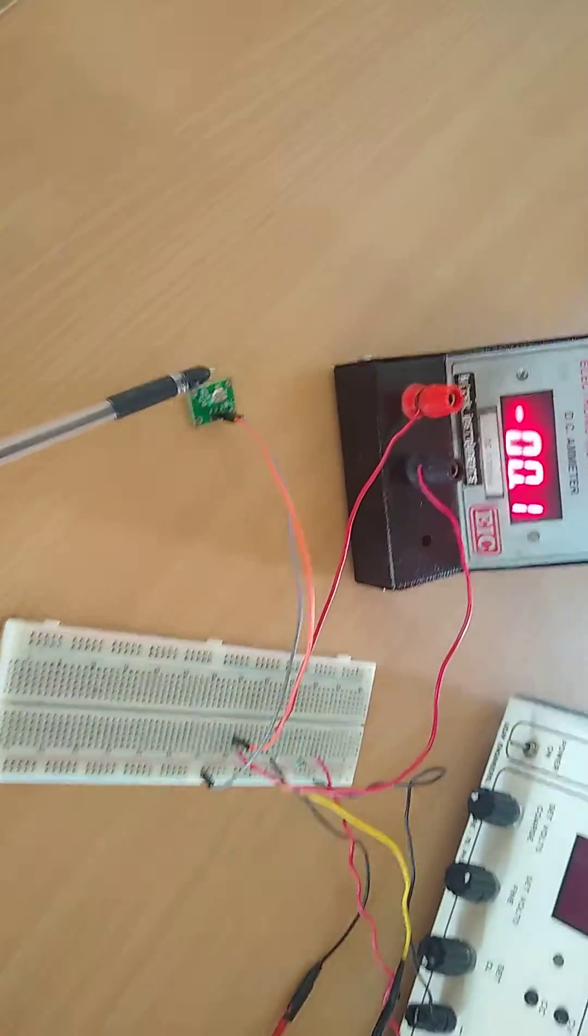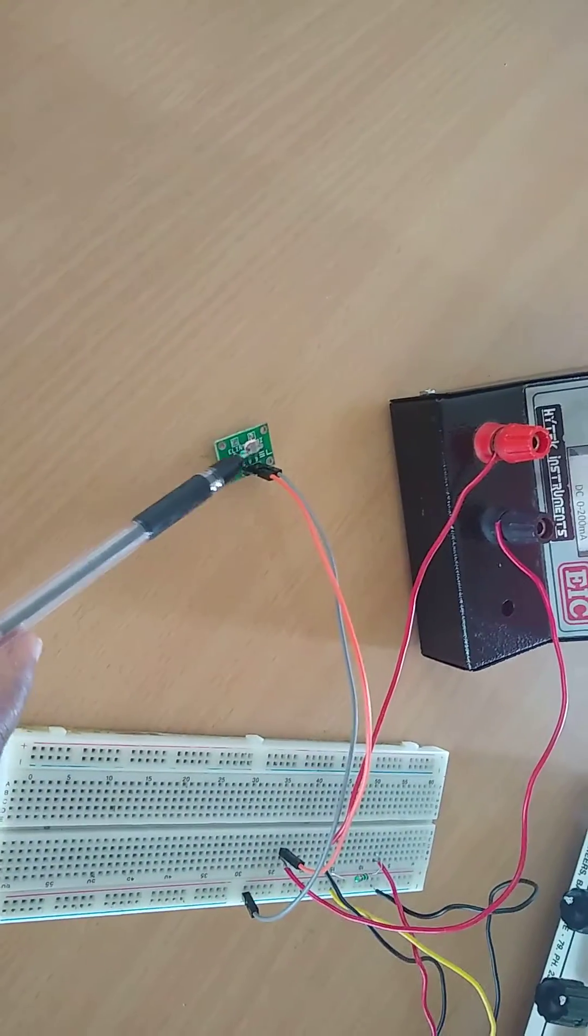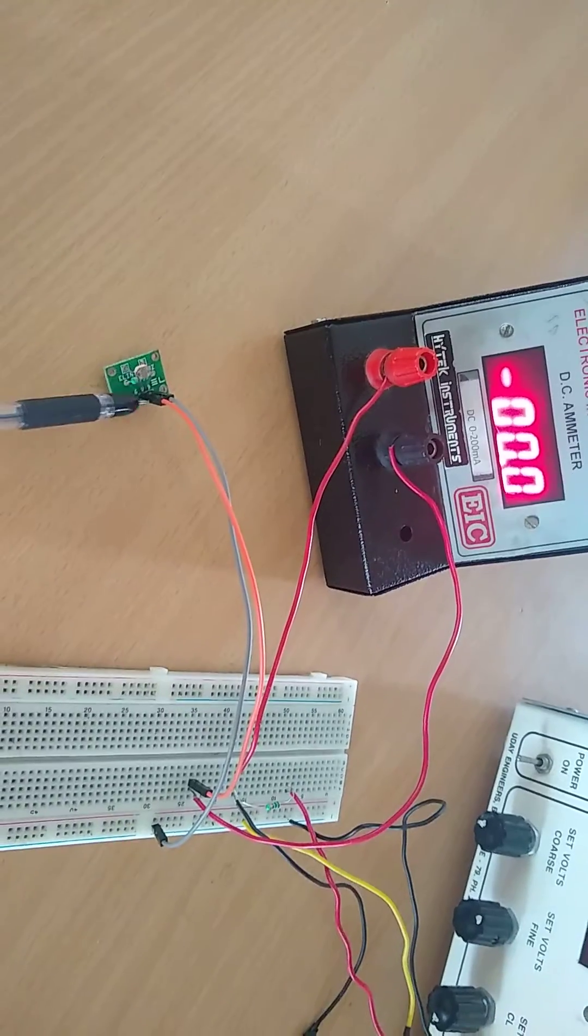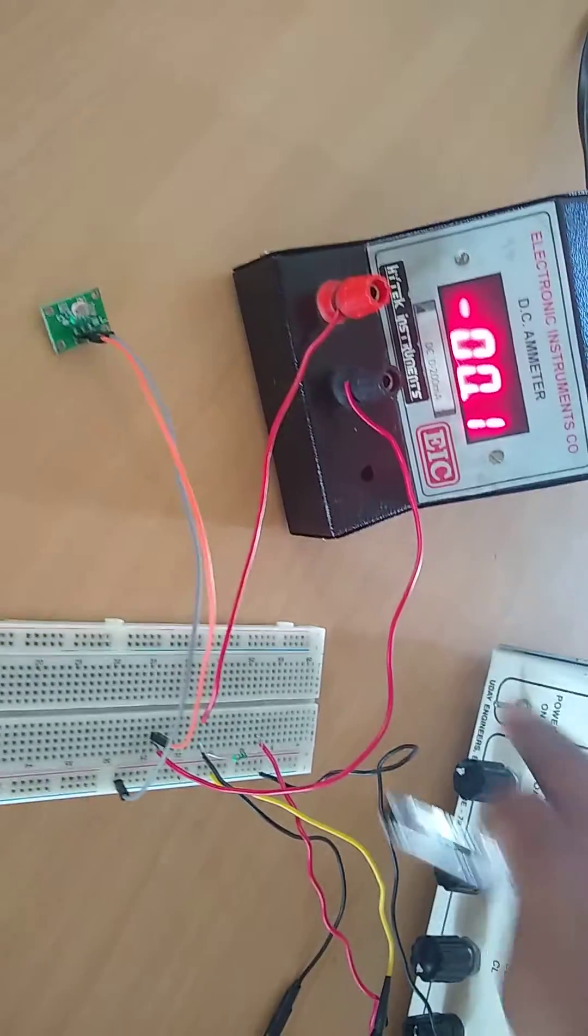And this is an LDR. As light intensity increases, the resistance decreases. And as light intensity decreases, the resistance will increase. Now switch on the power supply.